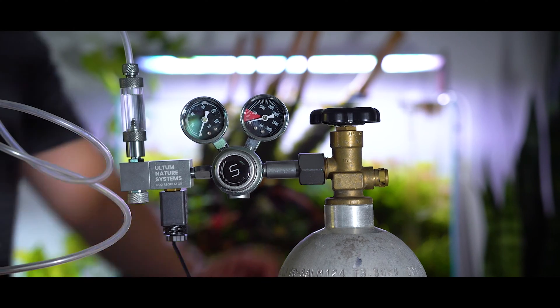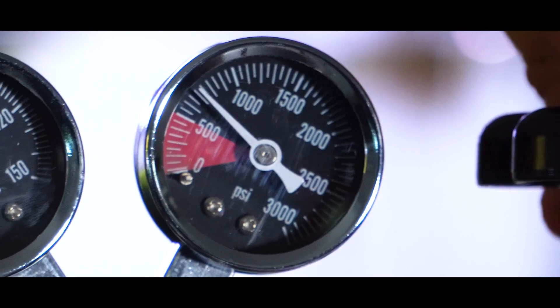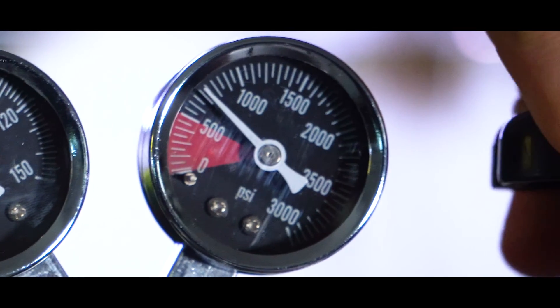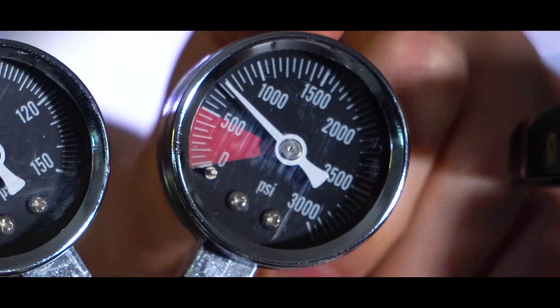Now that everything is actually attached and set up, it's time to release the pressure. You're going to do this by first opening the main valve on the CO2 cylinder, and you can open that up all the way. At this point, the meter on the right side of the regulator should read about 800 PSI if you're using a full CO2 cylinder.